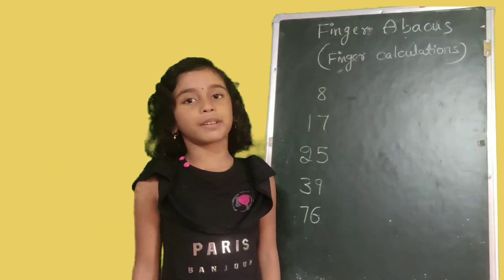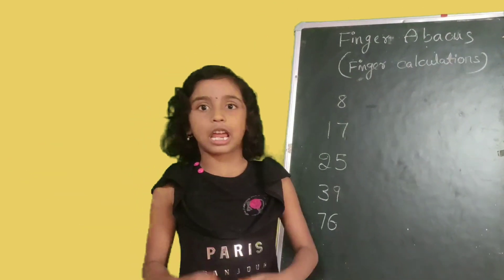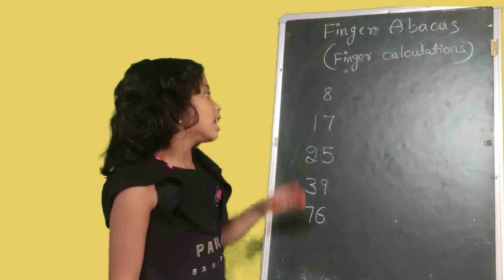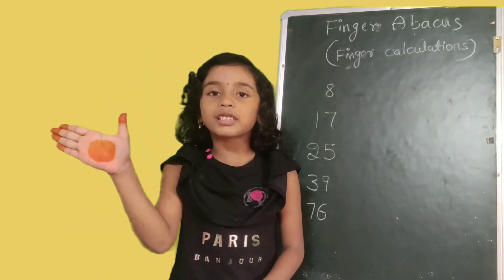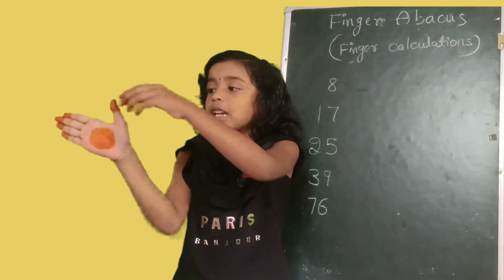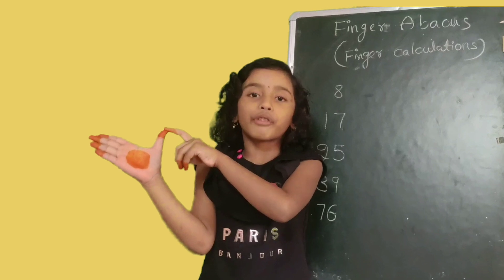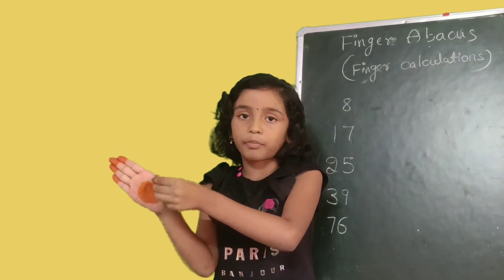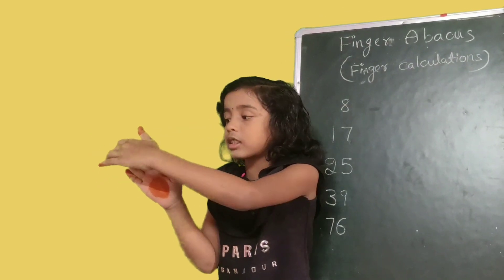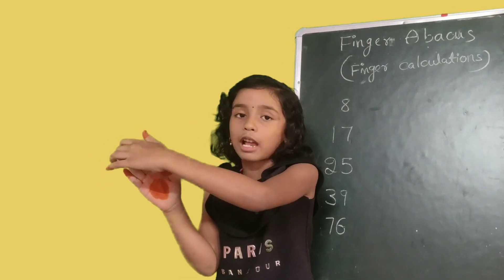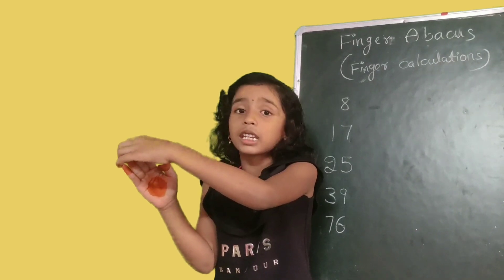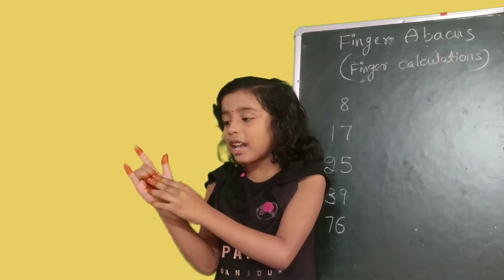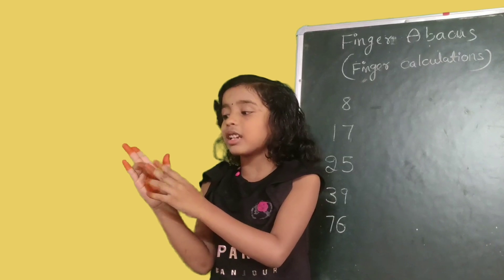Friends, this number is 8. First, the number is 8. Friends, this thumb finger value is 5. Five, six, seven, eight.